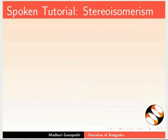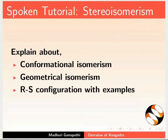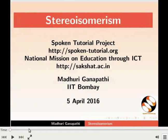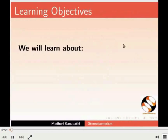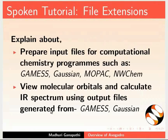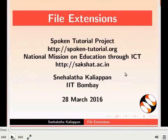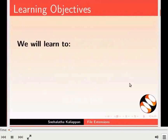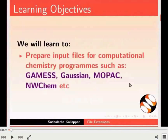The next tutorial is Stereoisomerism. This tutorial explains about stereoisomerism with examples. Welcome to this tutorial on Stereoisomerism. In this tutorial, we will learn about conformational isomerism and geometrical isomerism. The next tutorial is File Extensions. This tutorial explains how to prepare input files for computational chemistry programs, view molecular orbitals, and calculate IR spectrum. Welcome to this tutorial on File Extensions. In this tutorial, we will learn to prepare input files for computational chemistry programs.